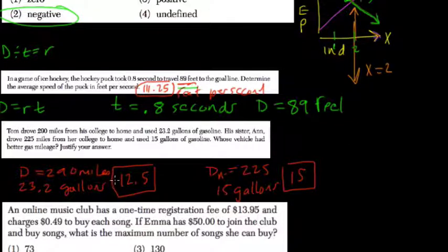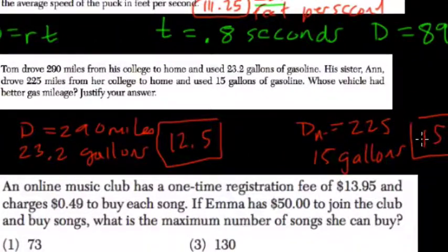Again, in the first case, he went 12.5 miles for each gallon, and she went 15 miles for each gallon. So she had better gas mileage because she can go further on a single gallon of gas.